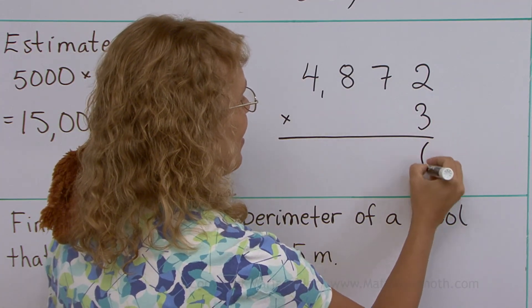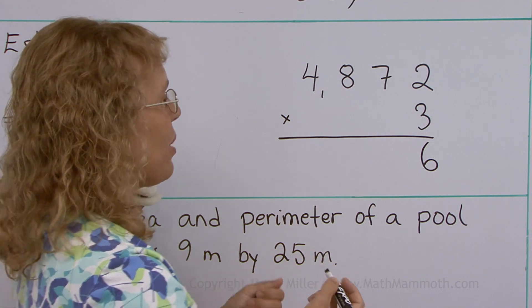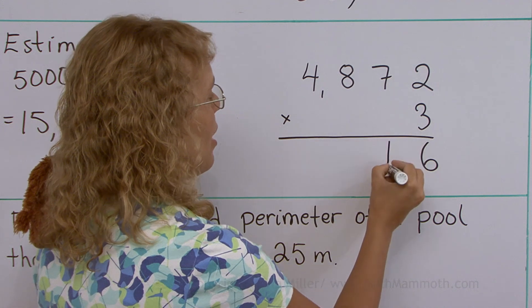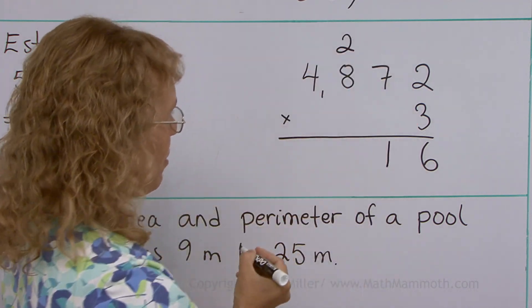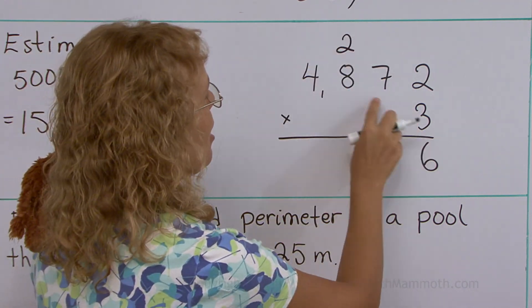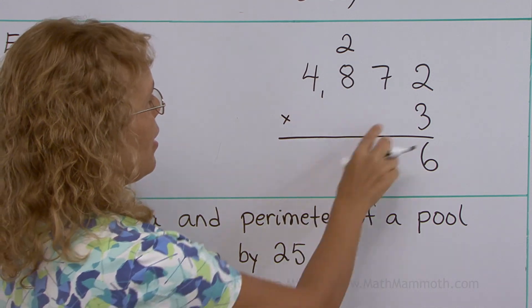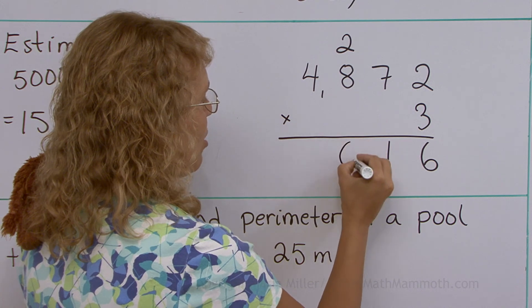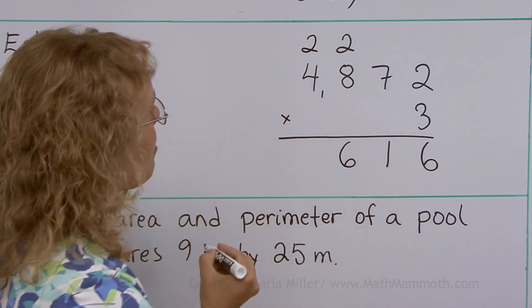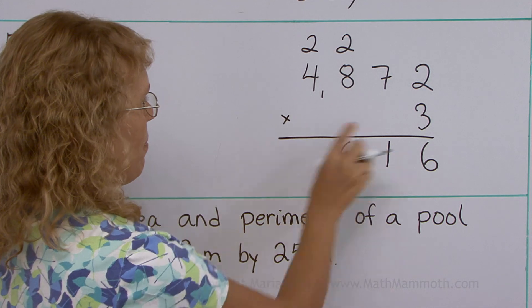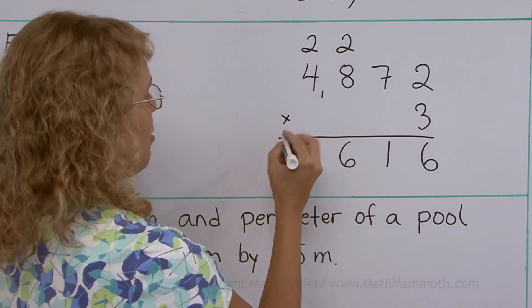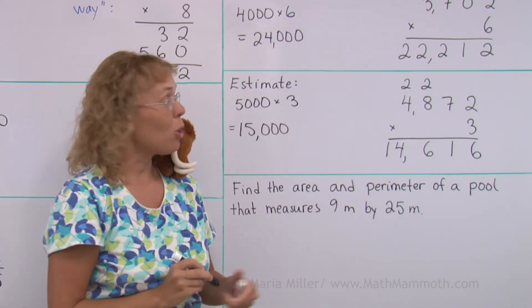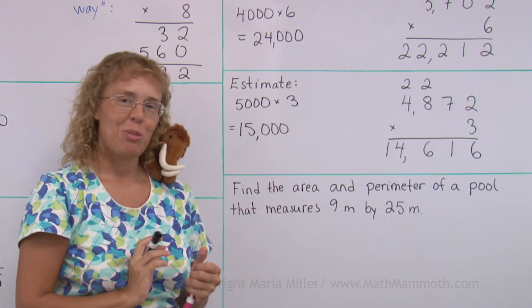3 times 2 is 6. There is no regrouping, I just go on. 3 times 7, 21. 21 means 1 here, 2 regrouped into the hundreds. 3 times 8, plus 2. So that's 24, plus 2, 26. Again, only 6 goes here. The 2 is regrouped. Then the thousands, 3 times 4, plus 2. 12, plus 2 is 14. So we get 14,616, close to our estimate. All seems to be well.